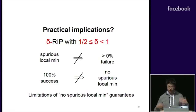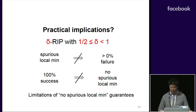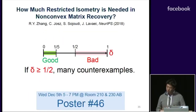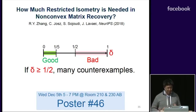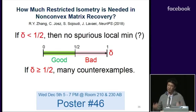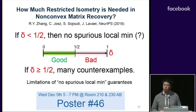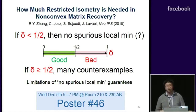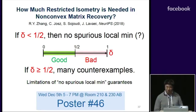There are counterexamples as well, so in general from a practical setting, local search might work but we might just not be able to prove it. In summary, what we've shown is that if delta is greater than or equal to one-half, the RIP assumption doesn't really say too much. But if it's less than one-half, we firmly believe the problem contains no spurious local minimum. From a practical setting, local search might continue to work, but we need to develop newer tools to analyze global convergence. Thank you very much, and we welcome you to come find us at our poster.